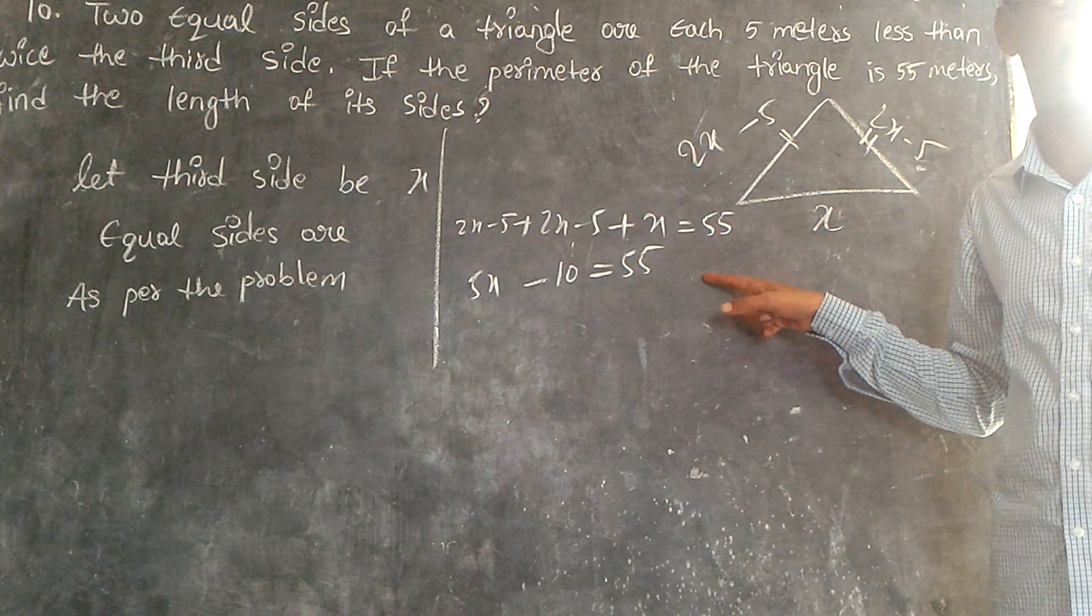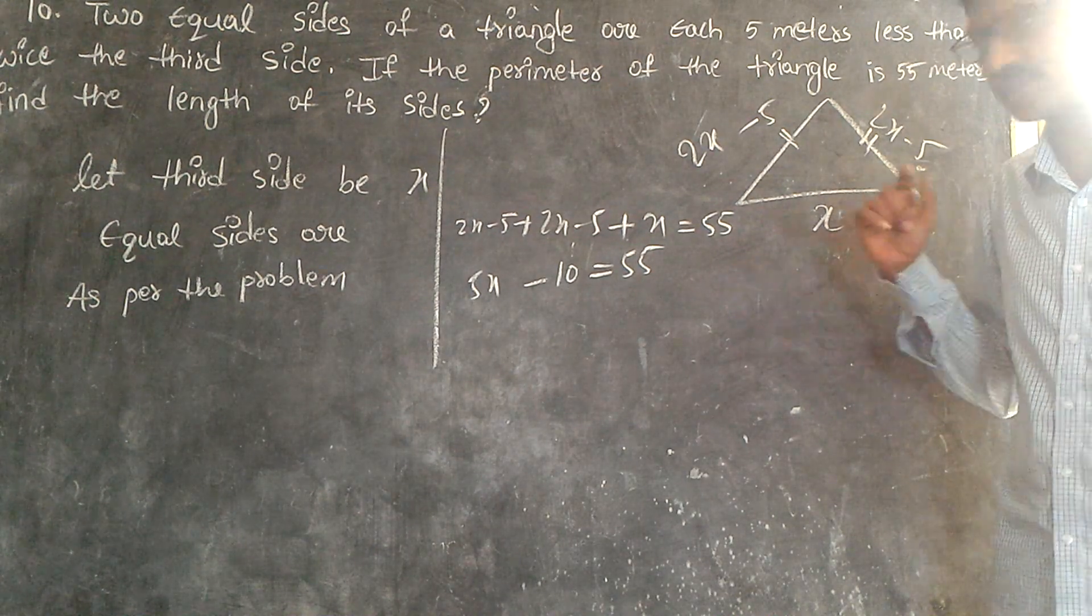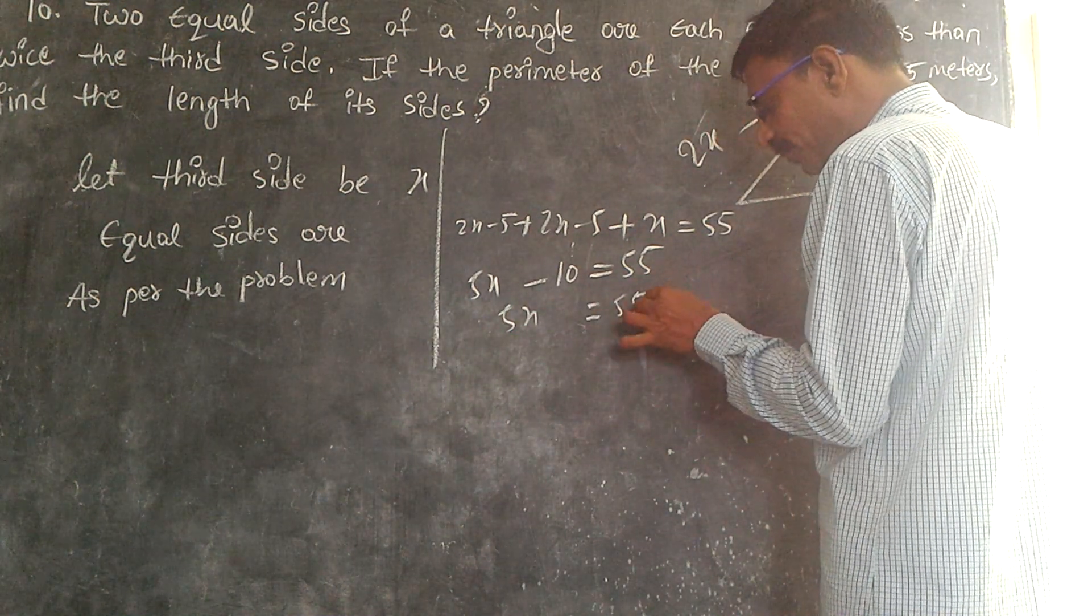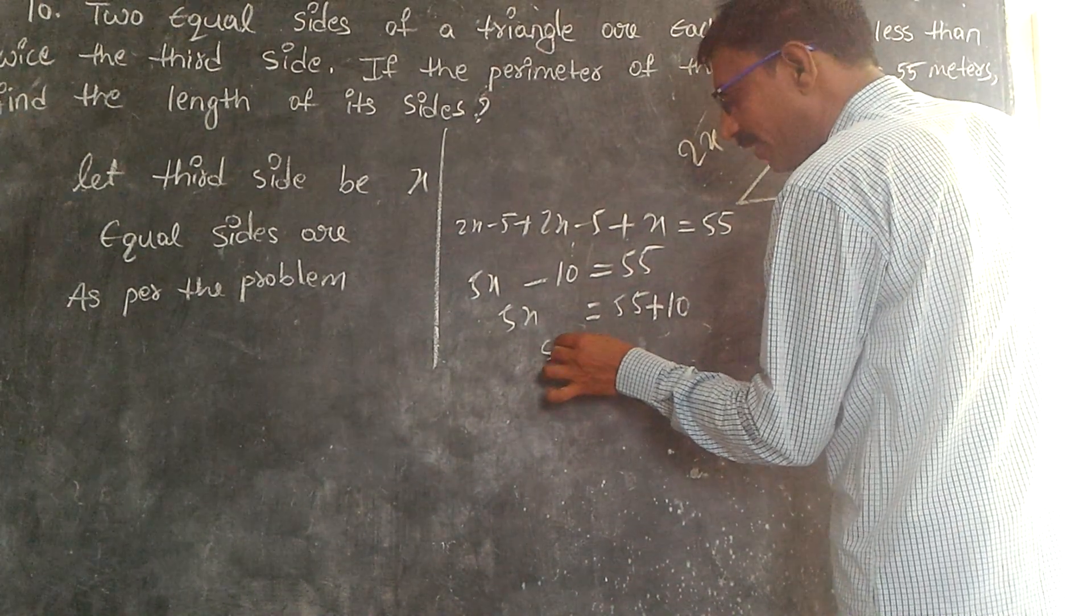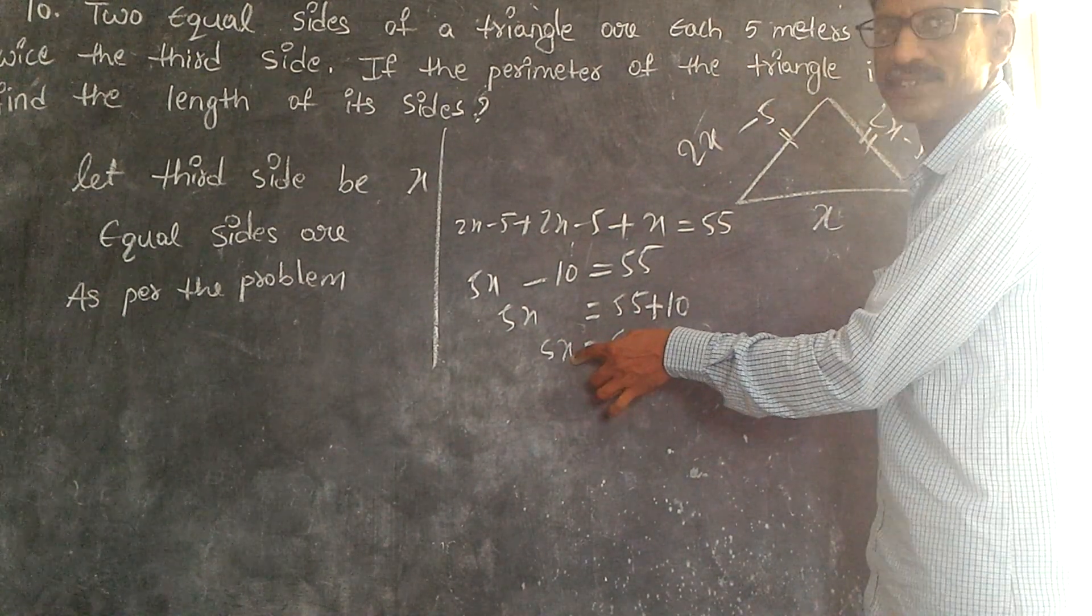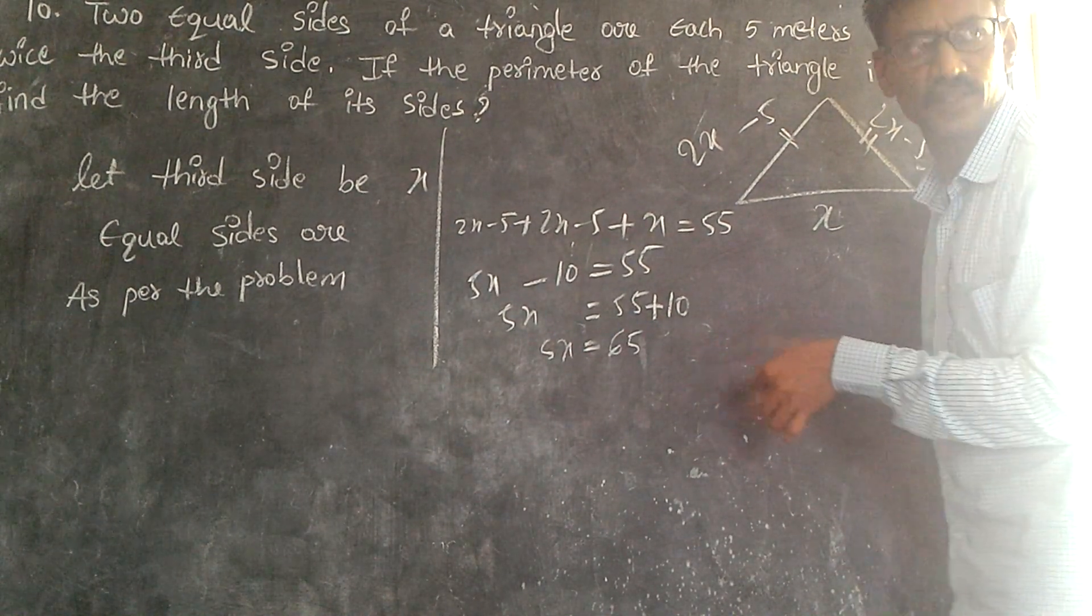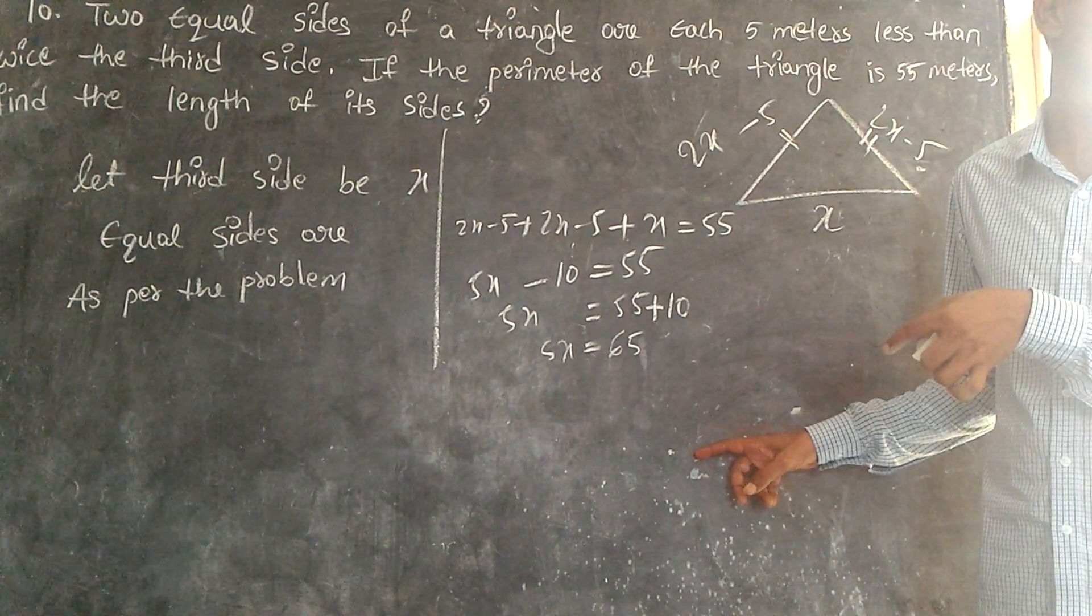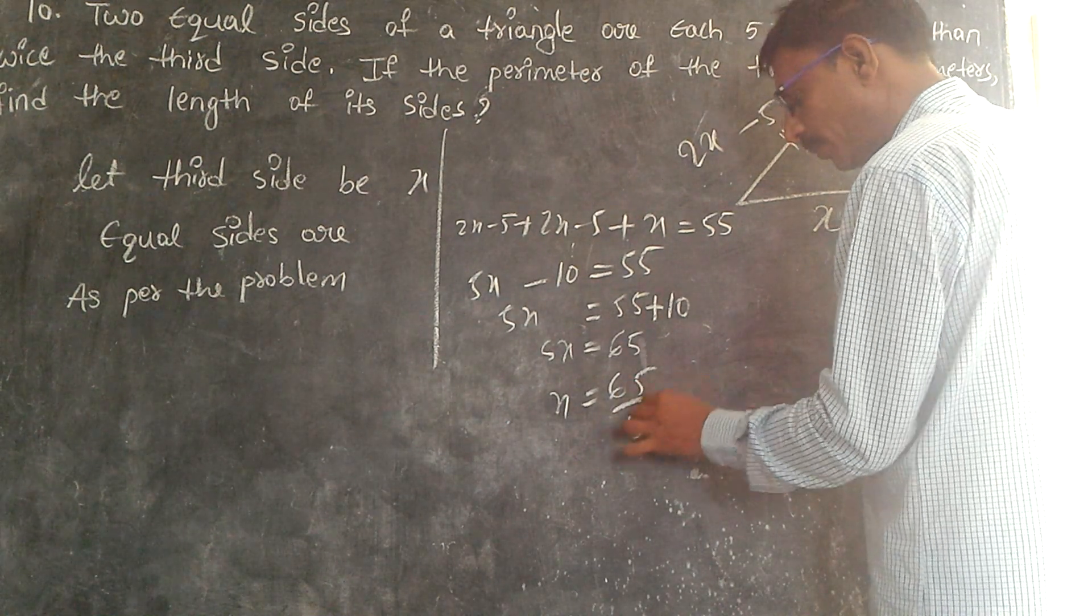So 5x equals 55 plus 10. 5x equals 65. 5 times x, that is 5 into x. 5 here multiply, we will go this side divide. It will divide 65.